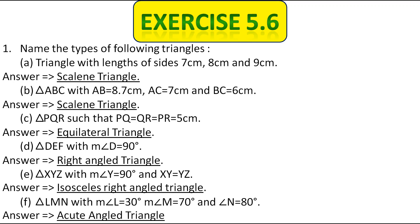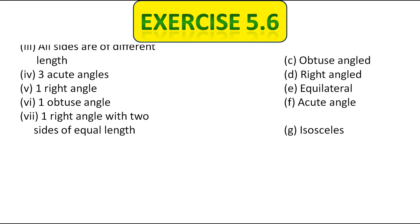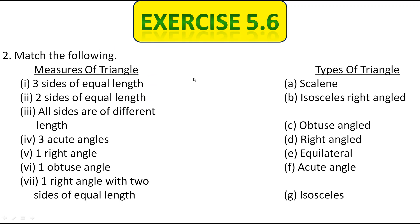Now let's move to the second question — match the following. The first one: three sides are of equal length. Whenever a triangle has three sides of equal length it is called equilateral, so the option is E (equilateral). Next, two sides are of equal length — whenever two sides are of equal length it is called isosceles. Here we have an isosceles with right angle option, but that's not the match for this one. The correct option for two equal sides is J1 (isosceles).